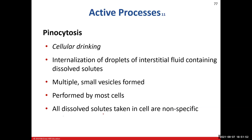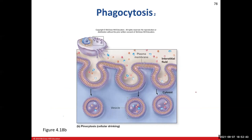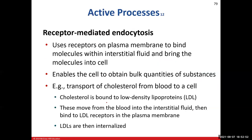Pinocytosis is cell drinking. The cell takes in liquid droplets from the interstitial fluid by forming many small membrane vesicles. Most cells can do this, but it's non-specific — the cell takes in whatever is in the liquid droplets, including molecules it may not need, like extra potassium or phosphate. It can't discriminate; it just takes whatever it can get.